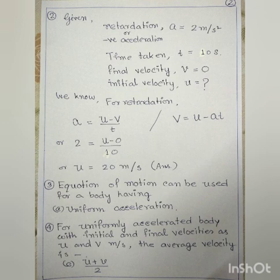Now our next problem: a car is retarded by applying brakes at the rate of 2 meter per second square and is stopped in 10 seconds. Find its initial velocity. Since the problem talks about retarded motion, negative acceleration is already implied. So retardation A equals to 2 meter per second square, time T equals to 10 seconds, and final velocity V equals to 0, as the object is at rest. We need to find the initial velocity U.